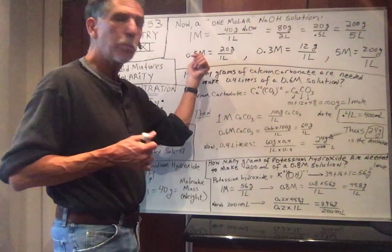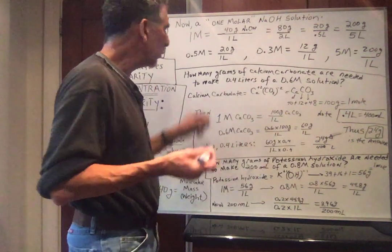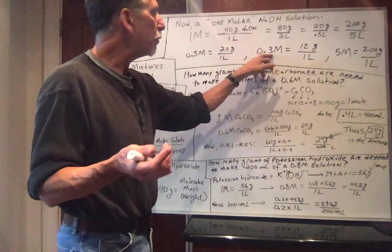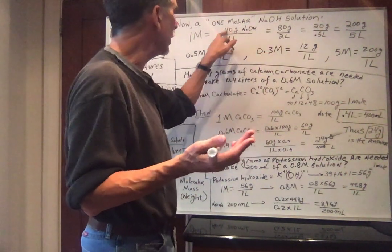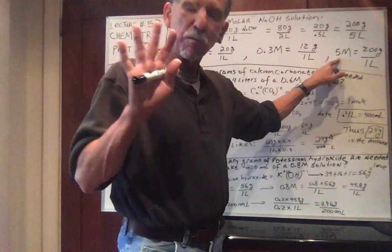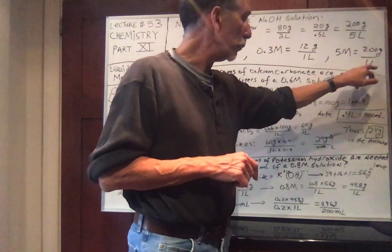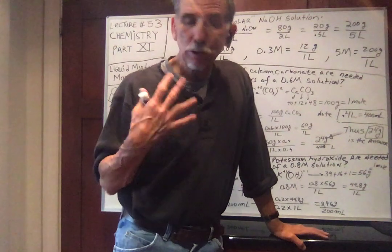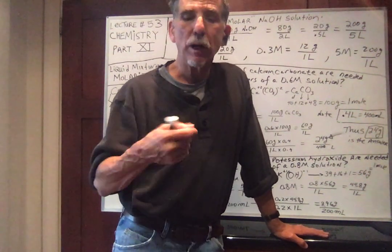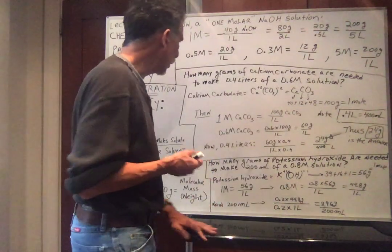Suppose I wanted a 0.5 molar solution of sodium hydroxide. You take 0.5 times 40. Half of 40 is 20. What if I wanted a 0.3M solution? Take 0.3 times 40, you get 12. What if I wanted a 5M, five times the concentration? You take 5 times 40 is 200 grams in one liter. Notice in one liter. So the concentration is five times as much because you're putting five moles of sodium hydroxide in one liter. Simple, simple, simple idea.